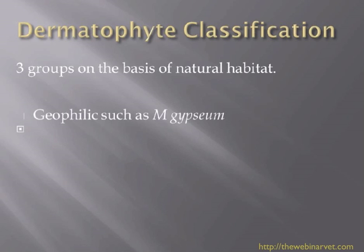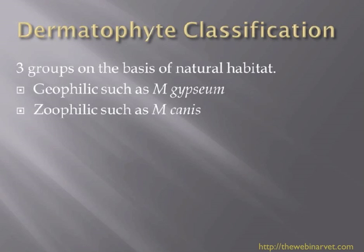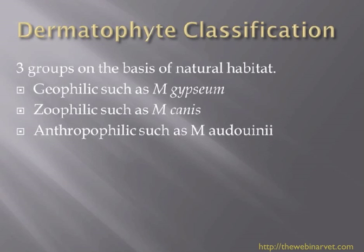There are really three groups of dermatophytes we can classify, based on where they tend to live. We have geophilic dermatophytes such as Microsporum gypseum, which are found in the soil but can infect animals. We have zoophilic ones, which are found on animals, transferred between animals, and don't do well in soil. And then we have anthropophilic dermatophytes such as Microsporum audouinii, which is a human dermatophyte. Microsporum canis, as you know, is zoonotic, so it can jump species as well.